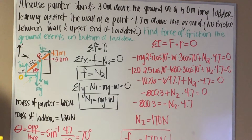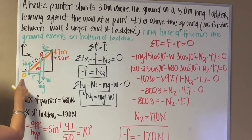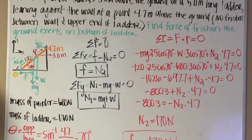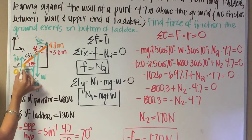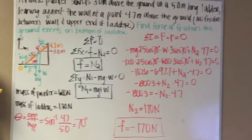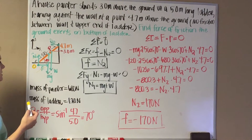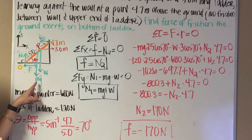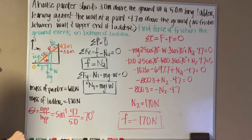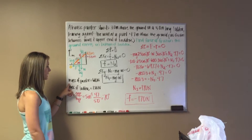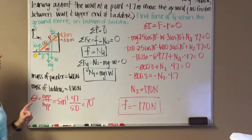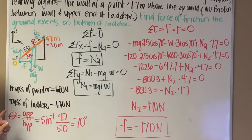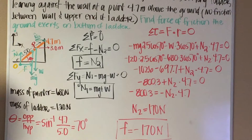Now we need to find a reference point. I chose the base of the ladder, so the distance from that point to itself is zero. This means the first normal force and the frictional force cancel out at that point. We're left with the weight of the ladder, the weight of the painter, and the second normal force. The weight of the painter is 680 newtons and the weight of the ladder is 120 newtons. Since the system is in equilibrium, the sum of the forces equals zero.